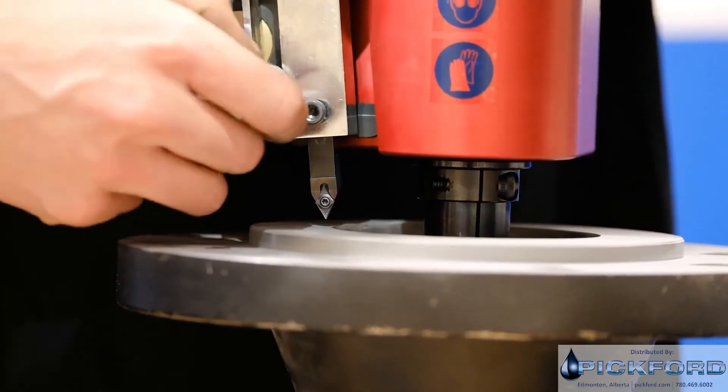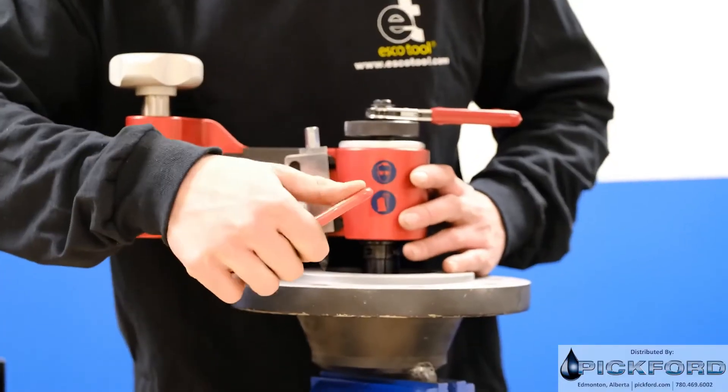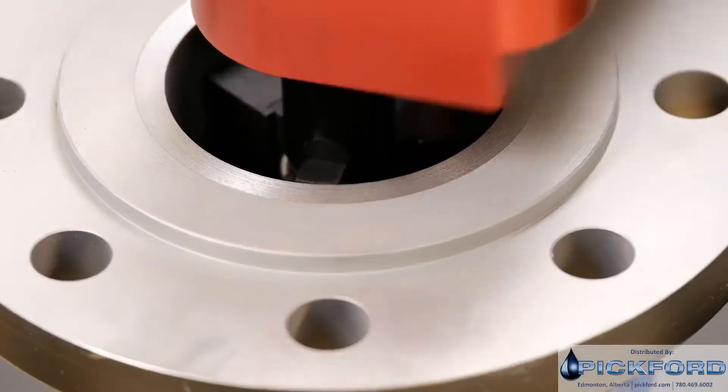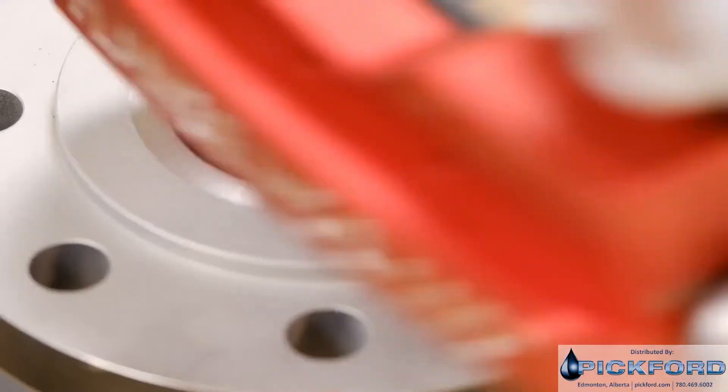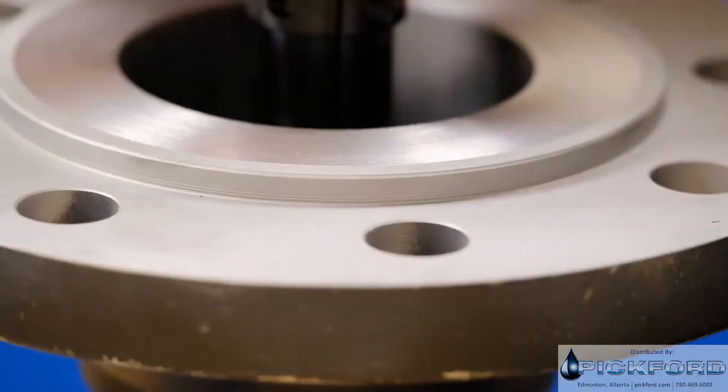The Esco FlangeHog 110 incorporates a worm gear that smoothly drives a lead screw to produce a continuous and true spiral finish. Two interchangeable cross-feeds are available for both smooth and stock finish in accordance with ASME B16.5 standards.